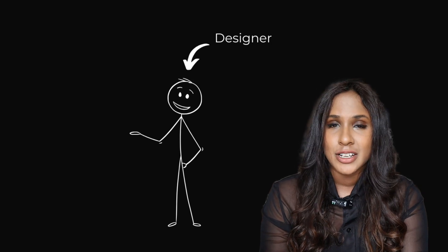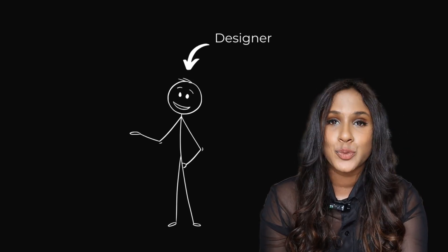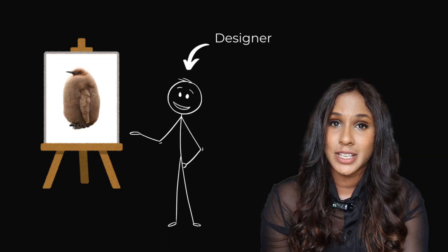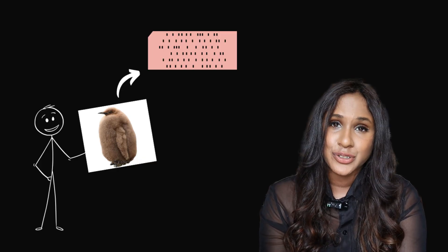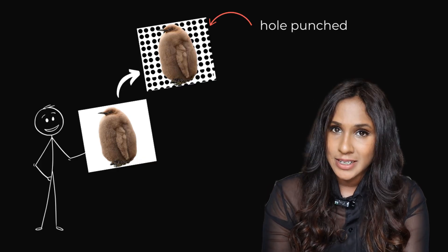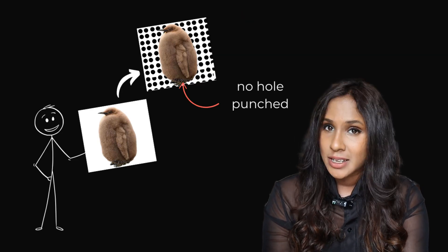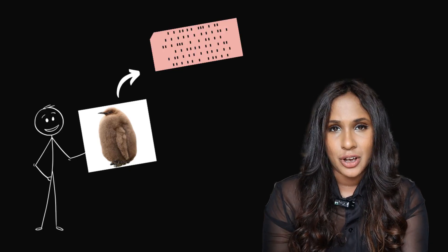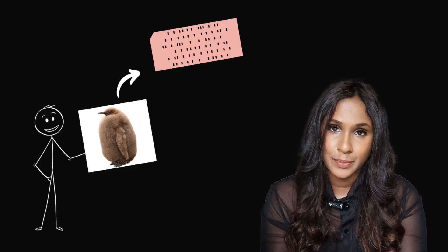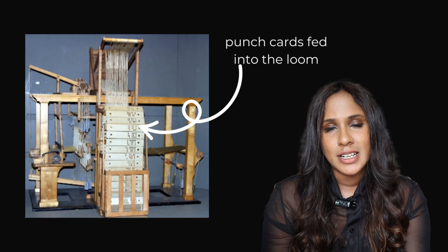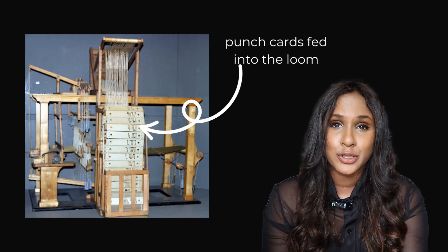Jacquard introduced the Jacquard loom, and his loom introduced punch cards. Here's how it worked: first, a designer draws or paints their pattern on a squared piece of paper. A card maker then converts this pattern onto punch cards, roll by roll. For each unpainted square in the design, a hole is punched into the card, while for each painted square, no hole is punched. The punch cards, each representing a piece of the pattern, are then tied together and fed into the Jacquard mechanism on top of the loom.